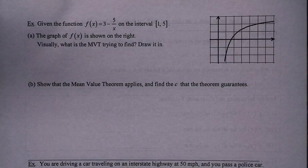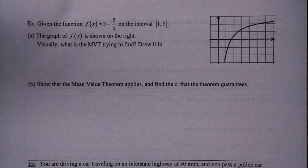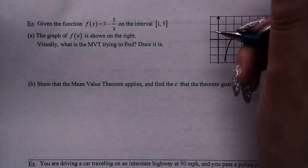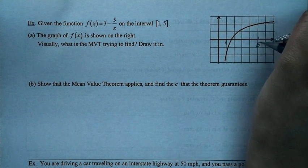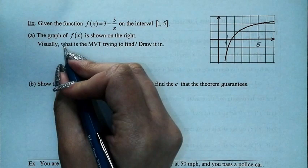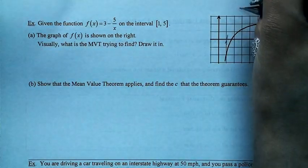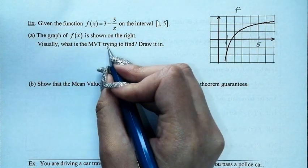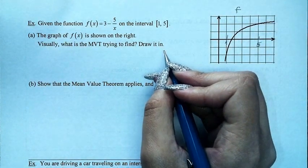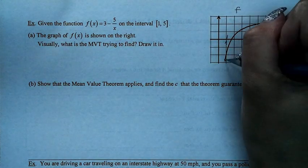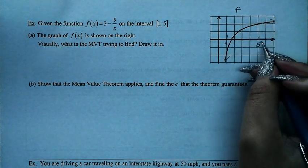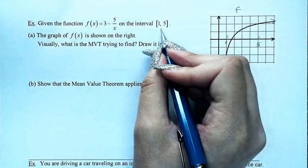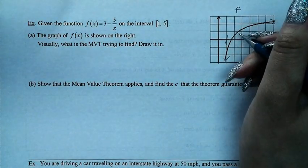For this problem, we have f(x) = 3 minus 5/x on the interval [1, 5]. The graph of f(x) is shown. Visually, the mean value theorem is trying to find a point where the tangent line is parallel to the secant line. The function is clearly continuous from 1 to 5 — the only problem is at x = 0, which is not part of the interval, so we are safe.